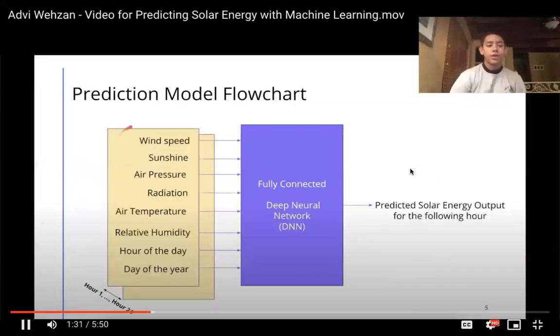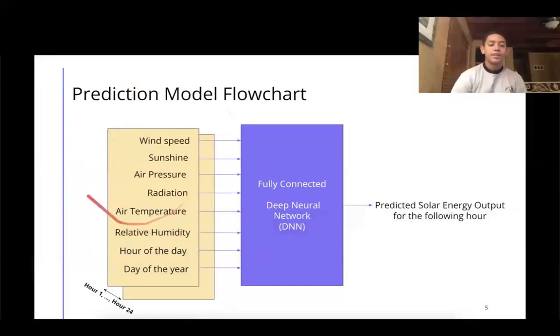So let's take a quick look at our flow chart. Right here, we can see all the numerous factors that we're taking in as features, including wind speed, sunshine, and air pressure over a 24-hour period.